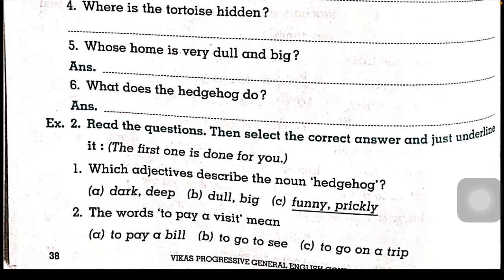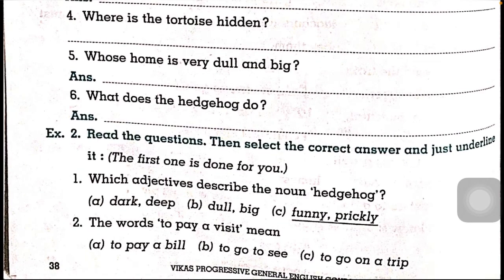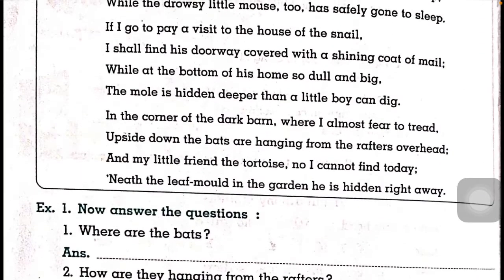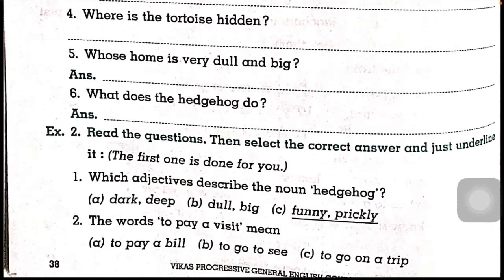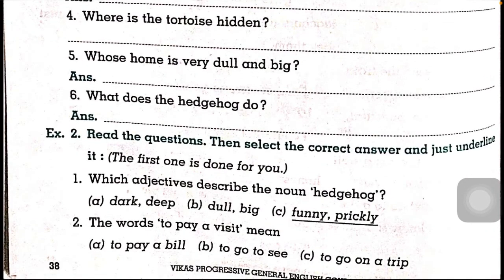Now we are going to example number two. Read the question and then select the correct answer and just underline it. We have to read these questions properly and find the correct answer in the paragraph, then underline it. The question is: which adjective describes the noun 'hat talk'? We already know that 'hat talk' is described as funny and prickly. An adjective is a word which gives information about a noun.